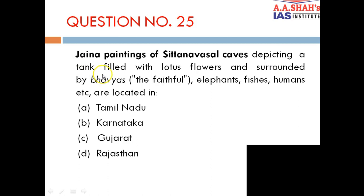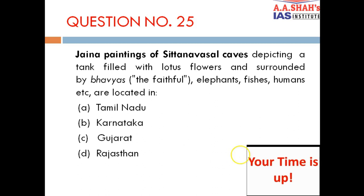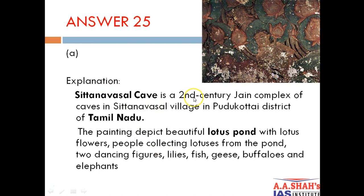Question 25: Jaina paintings of Sittanavasal caves depicting a tank filled with lotuses and surrounded by bhavyas — the faithful — including elephants, fishes, humans etc., are located in A. Tamil Nadu. The correct answer is A — Tamil Nadu. Sittanavasal caves is a 2nd century Jaina complex of caves in Sittanavasal village in Pudukottai district of Tamil Nadu. The paintings depict a beautiful lotus pond, people collecting lotuses, two dancing figures, lilies, fish, geese, buffalos and elephants.